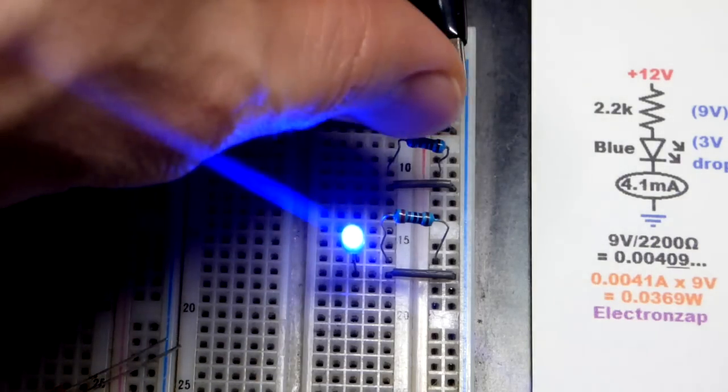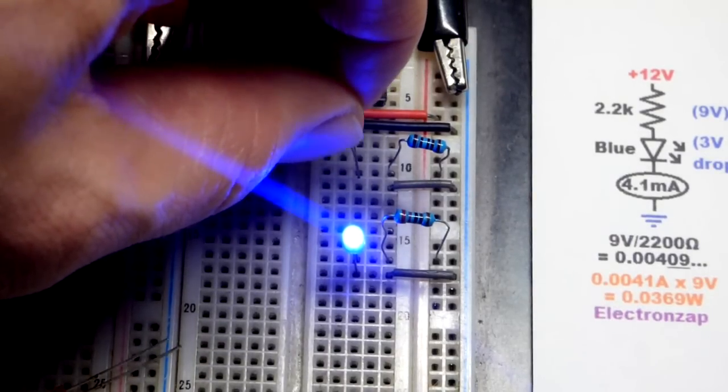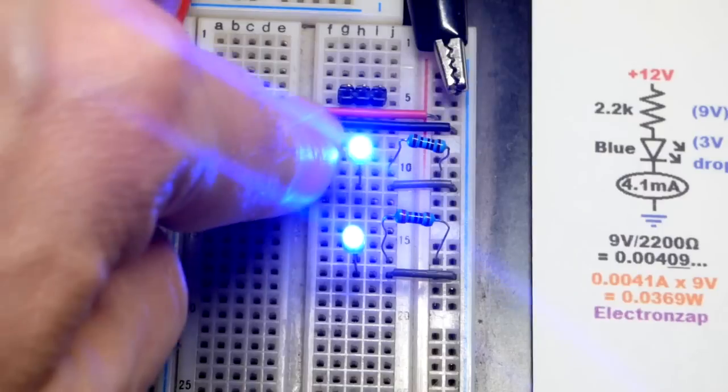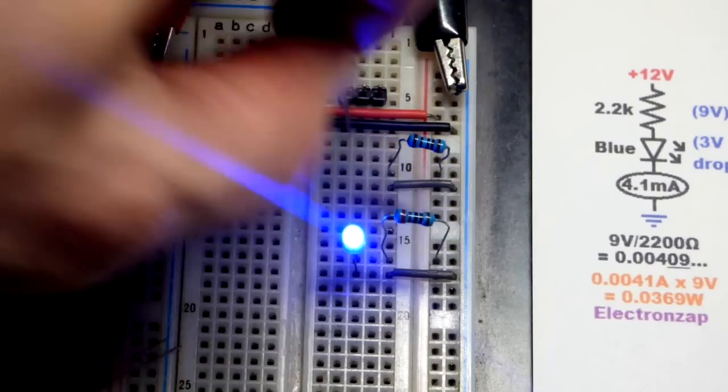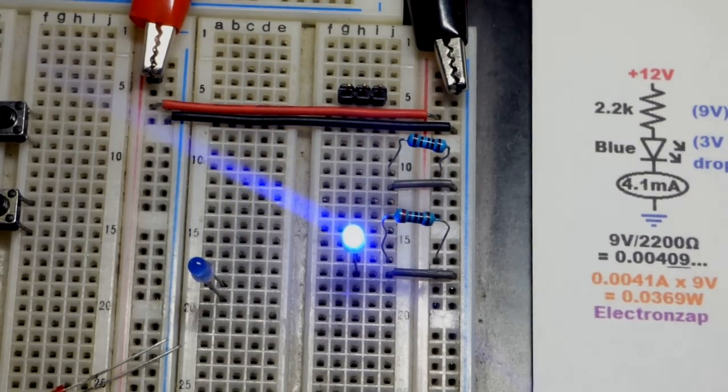If I pluck this resistor, that's a 1,000 ohm resistor, 2,200. With this blue LED, now we're going to get about twice the current flowing through there. It's obnoxiously bright, in my opinion, right there. So, 2,200, maybe even 3,000 ohms, I think would be good for protecting the blue LED from 12 volts.